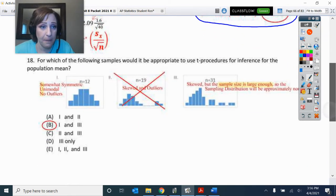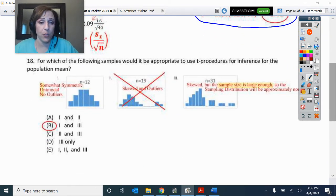All right. So how about this? For which of the following samples would it be appropriate to use T procedure for inference for the population mean? So if we have a small sample size, we need sun. If we have a large sample size, we're okay because the sampling distribution will be approximately normal. So number one is a small sample size. So sun is needed and it is very sun, nice and symmetric, unimodal and no outliers.